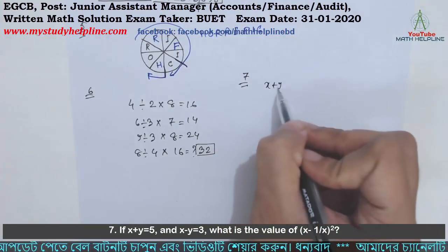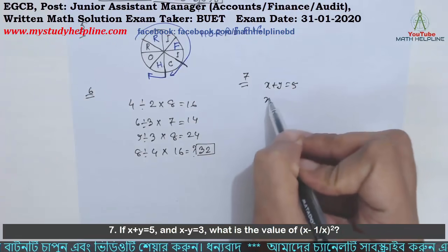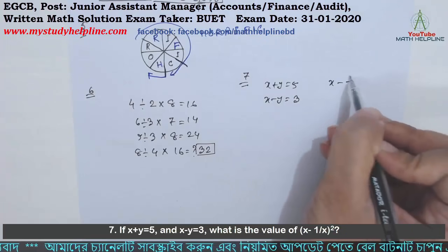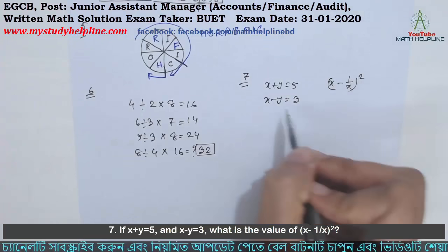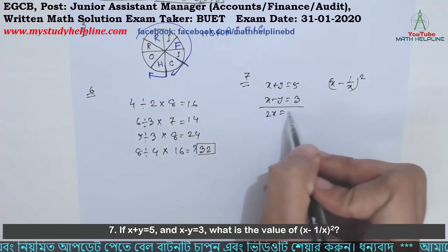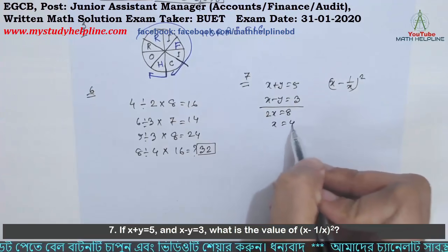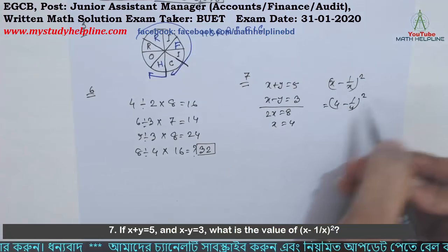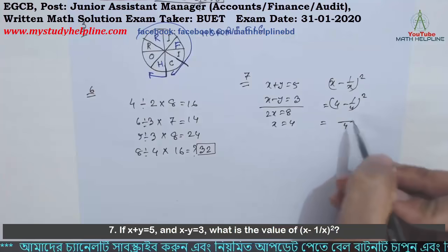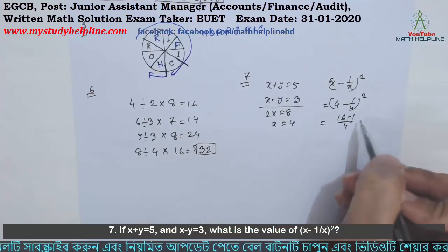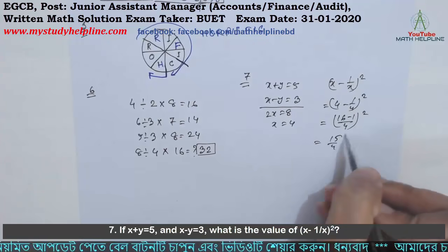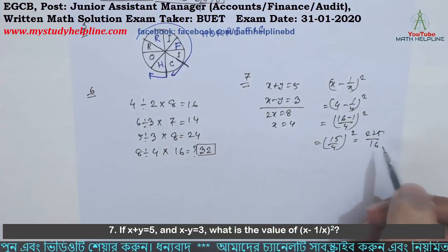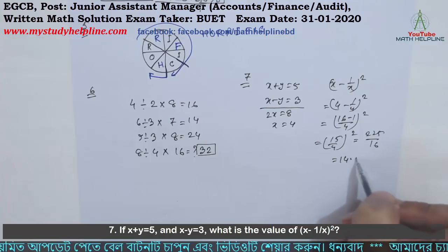Number 7. If x plus y equals 5 and x minus y equals 3, what is the value of (x minus 1/x) whole square? Adding both equations: 2x equals 8, so x equals 4. Therefore, (4 minus 1/4) whole square equals (15/4) whole square equals 225/16, which equals 14.0625.